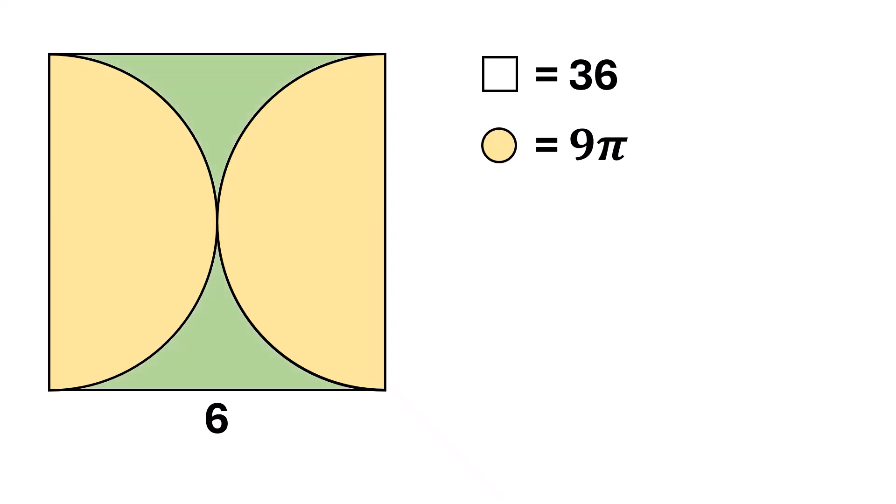Now, let's focus on the green region. The area of the green region is equal to the area of the square, minus the area of the circle. Substituting the values, we get 36 minus nine pi square units.